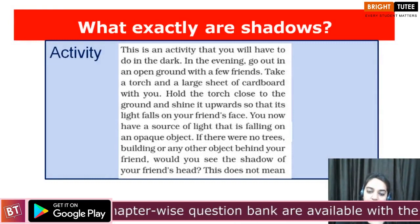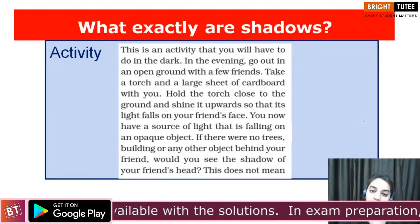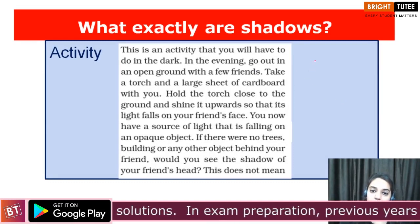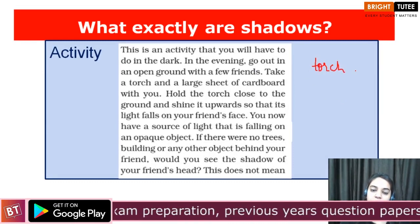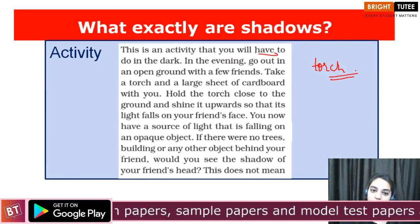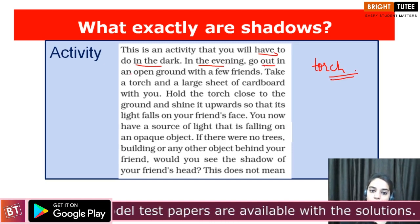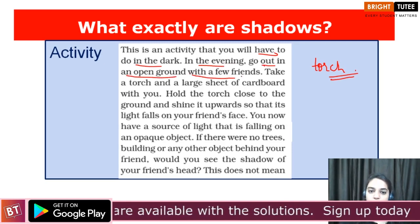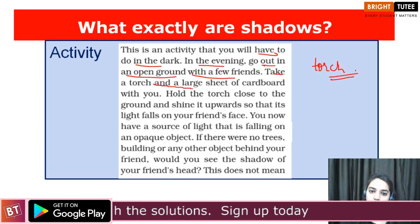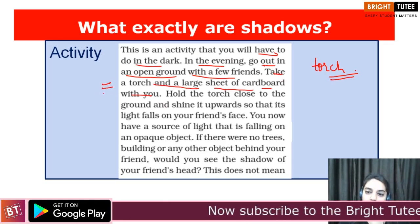In this activity, we are going to obtain the shadow at night using a torch. You will go out in the dark in an open ground with your friends. Take a torch and a large sheet of cardboard. Those are the materials required. Now hold the torch close to the ground.